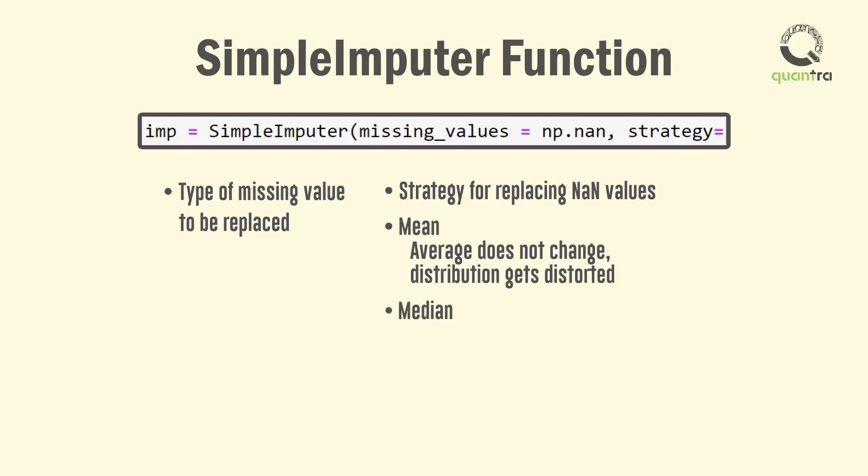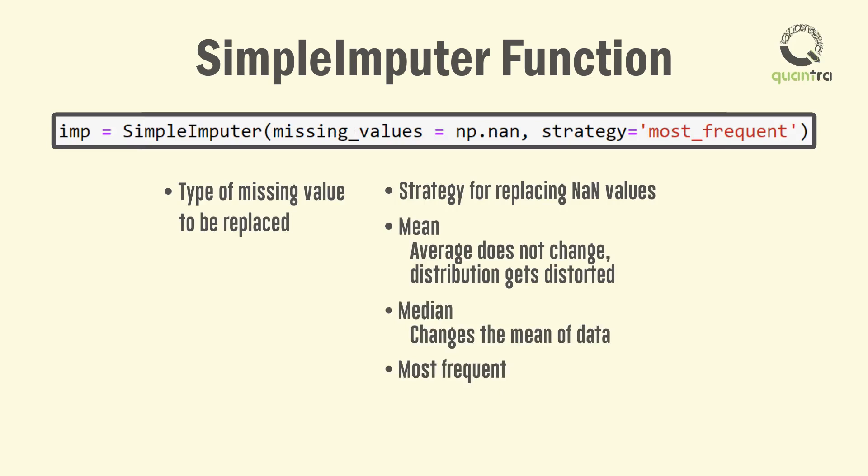The median can also be used to replace the missing values. This would lead to changing the mean of the data. In this model, we use the most frequently appearing data entry, which is the mode of the column being checked for the missing data. This is done by passing most_frequent in the strategy field of the imputer function.